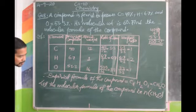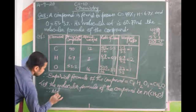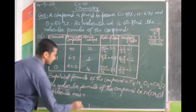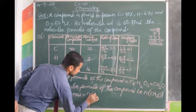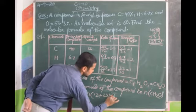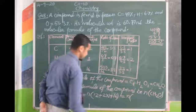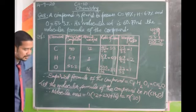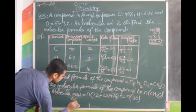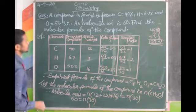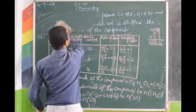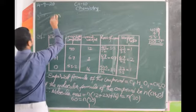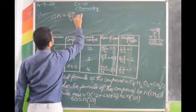Let the molecular formula of the compound be N(CH2O), since molecular formula = N × empirical formula. Now find molecular mass: N × (12 + 2×1 + 16) = N × 30.